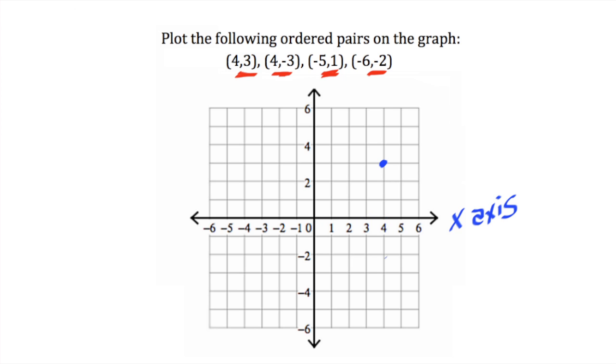and down 3 for negative on the y-axis. Our point would be located there. The third pair is (-5, 1), so we would count over to -5 on the x-axis, go up 1 on the y-axis. And our final pair, (-6, -2), we go over -6 on the x-axis, and down 2 on the y-axis. Our point would be located right there.